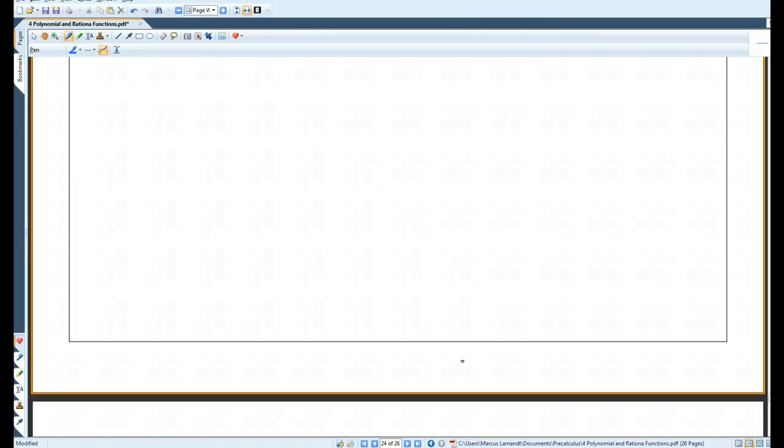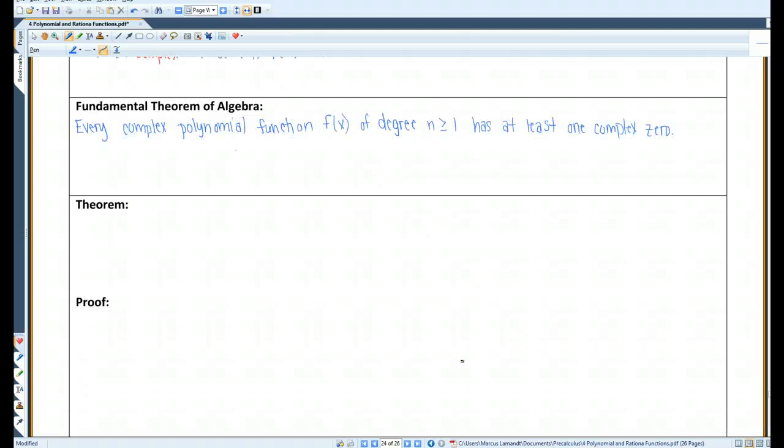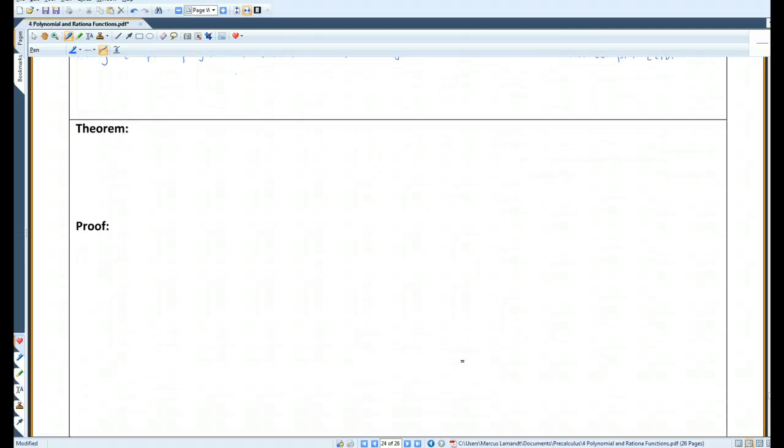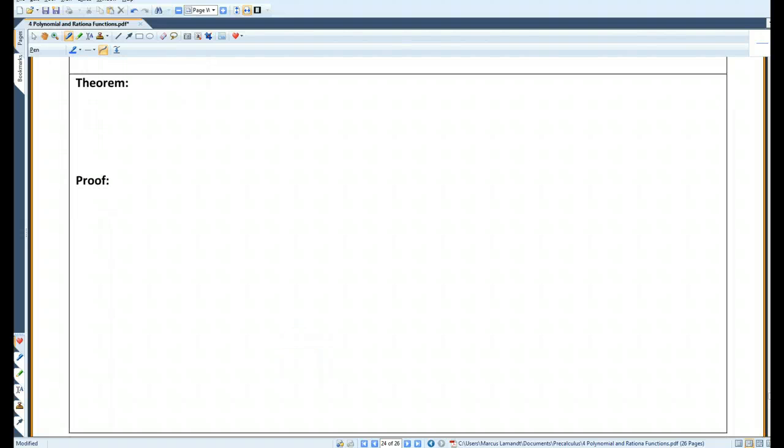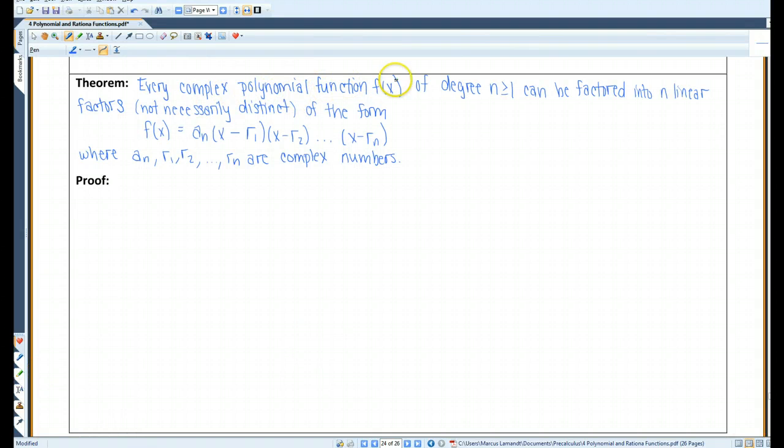Let's do this theorem first. Every complex polynomial function f of x of degree n greater than or equal to 1 can be factored into n linear factors, not necessarily distinct. That means that you could have a repeating factor of this form, where a sub n, r1, r2, etc. are all complex numbers. And I think we're actually going to skip over the proof for this.